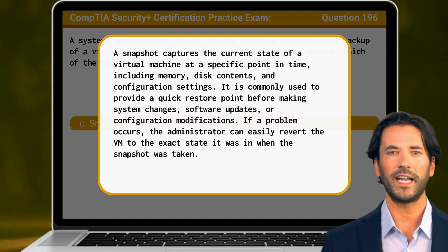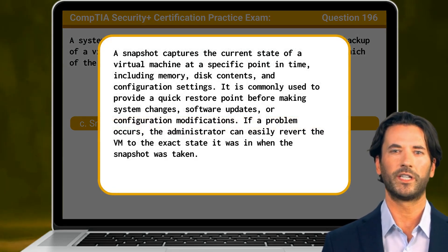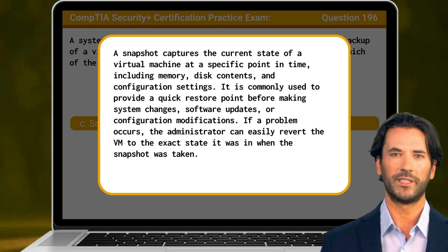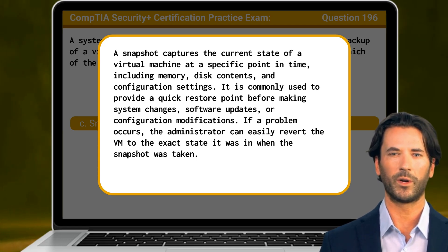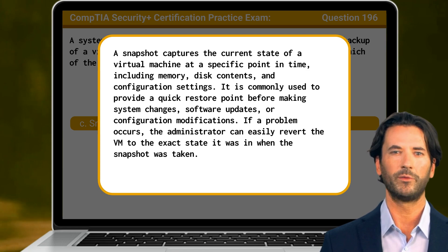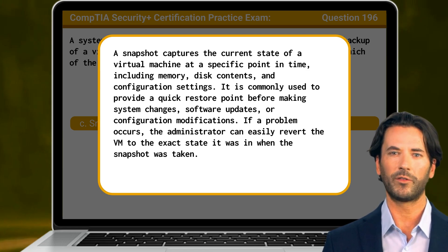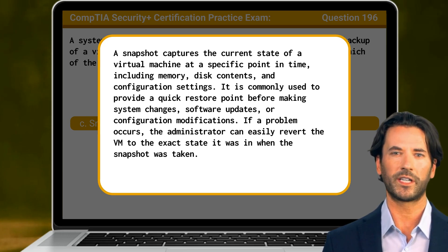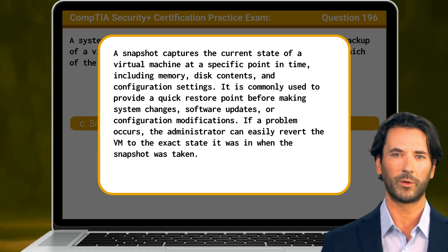A snapshot captures the current state of a virtual machine at a specific point in time, including memory, disk contents, and configuration settings. It is commonly used to provide a quick restore point before making system changes, software updates, or configuration modifications. If a problem occurs, the administrator can easily revert the VM to the exact state it was in when the snapshot was taken.